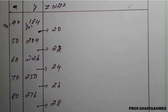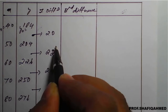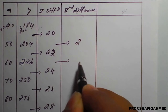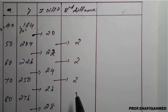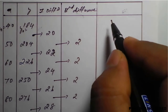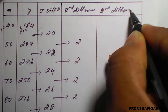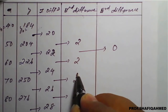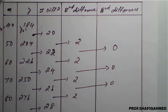Once we get the first differences, we go for the second difference. 22 minus 20 gives 2; 24 minus 22 gives 2; 26 minus 24 gives 2; 28 minus 26 gives 2. Then for the third difference: 2 minus 2 is 0, 2 minus 2 is 0, 2 minus 2 is 0.